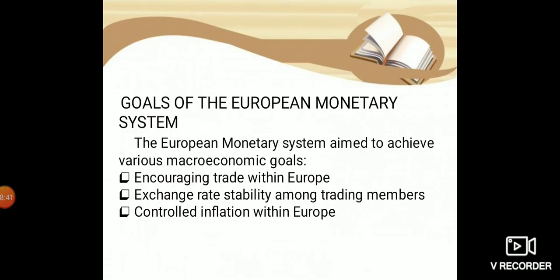Goals of the European Monetary System: The EMS aimed to achieve various macroeconomic goals. The first goal is encouraging trade within Europe. The second goal is exchange rate stability among trading members, which further encourages trade in Europe. The third and final goal is controlling inflation within Europe — the main aim being to control the fluctuation rate in order to help trade within Europe.